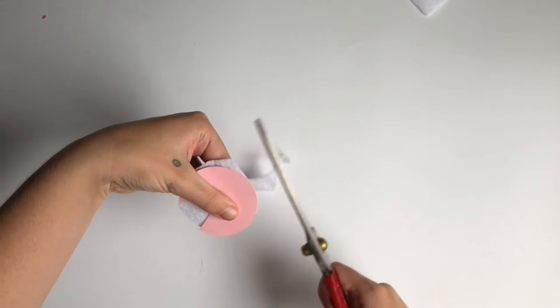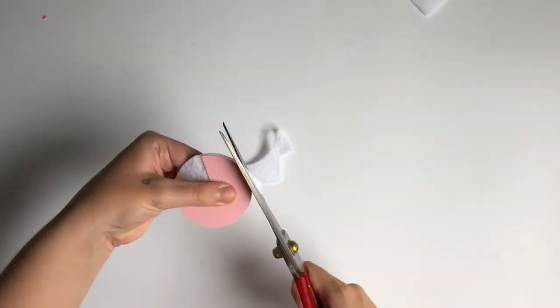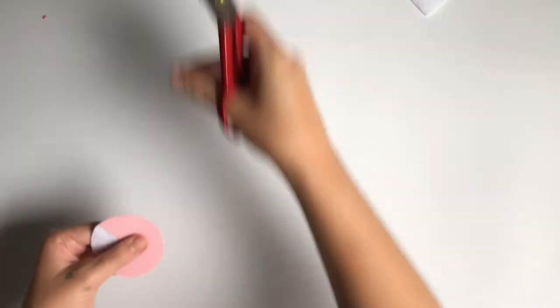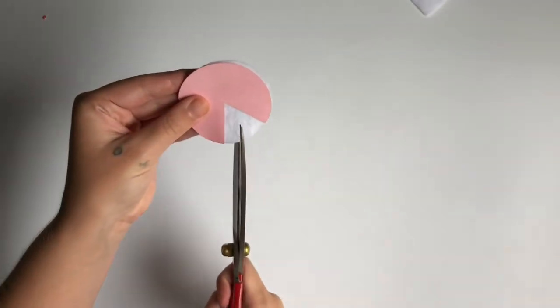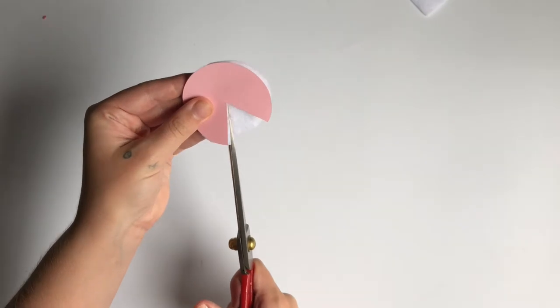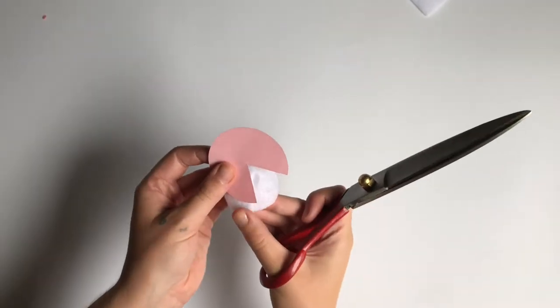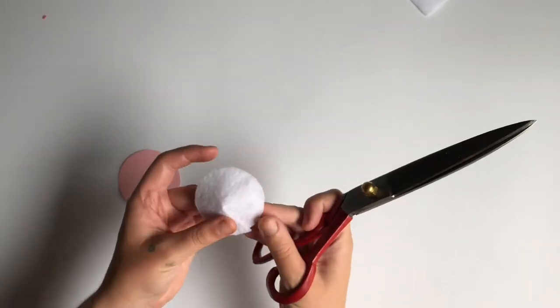I'd also like to mention that instead of felt you could use craft foam, vinyl or even leather. Something that's going to hold the shape of the cone rigidly. I like felt because it's soft. I think that craft foam maybe wouldn't last as long and it's also very cheap.